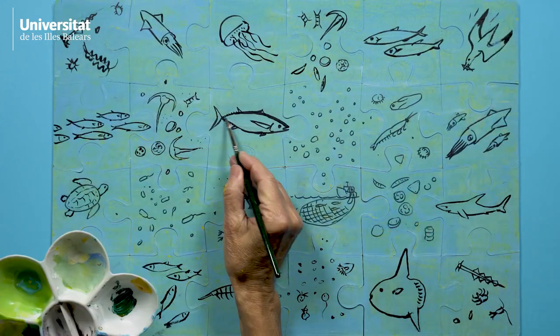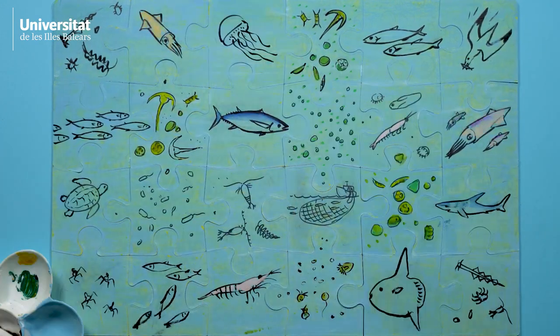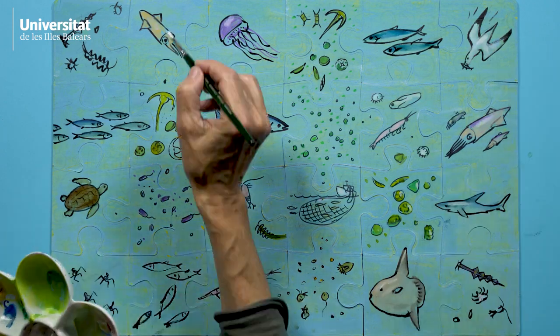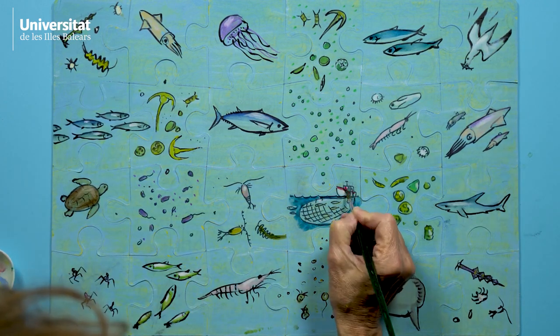But without those invisible bacteria, there would be no tuna, because bacteria are an essential part of the ocean food web, and all the pieces of the puzzle are connected.